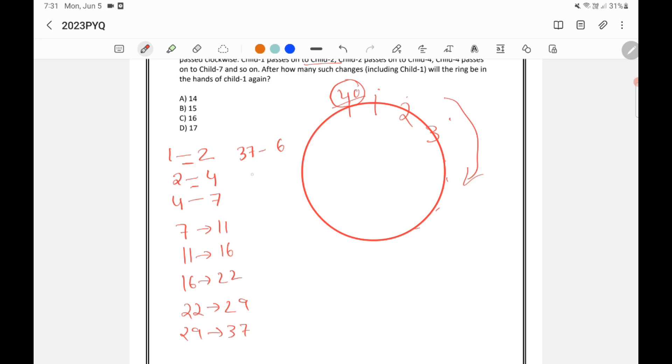Now we need to add 10. From 6 to 16. Then 16 to add 11, 27. Then 27 to 39 by adding 12. Now we need to add 13. So 39 plus 13 is 52. But we know that only 40 students are there. 52 means it will be the 12th student.